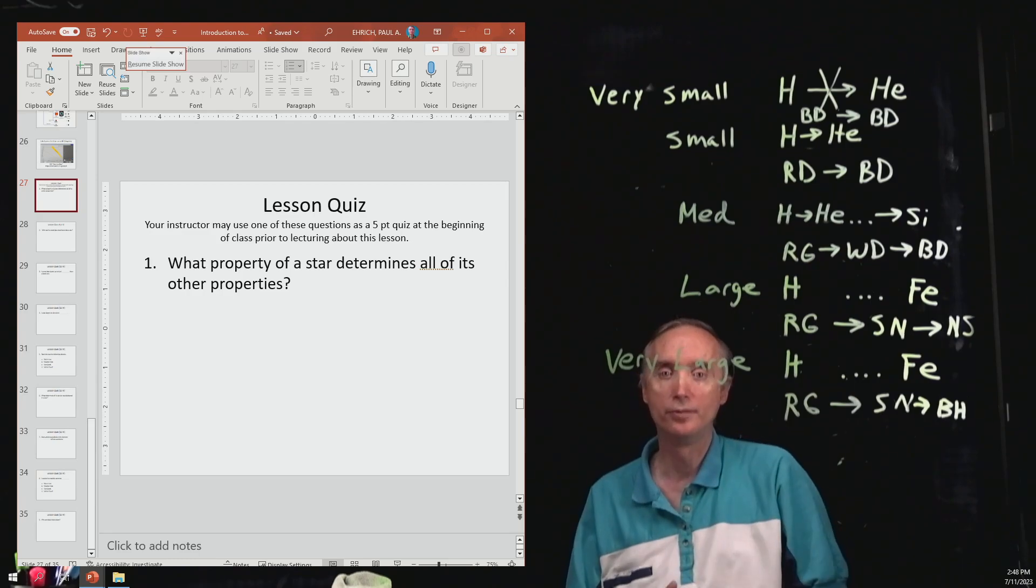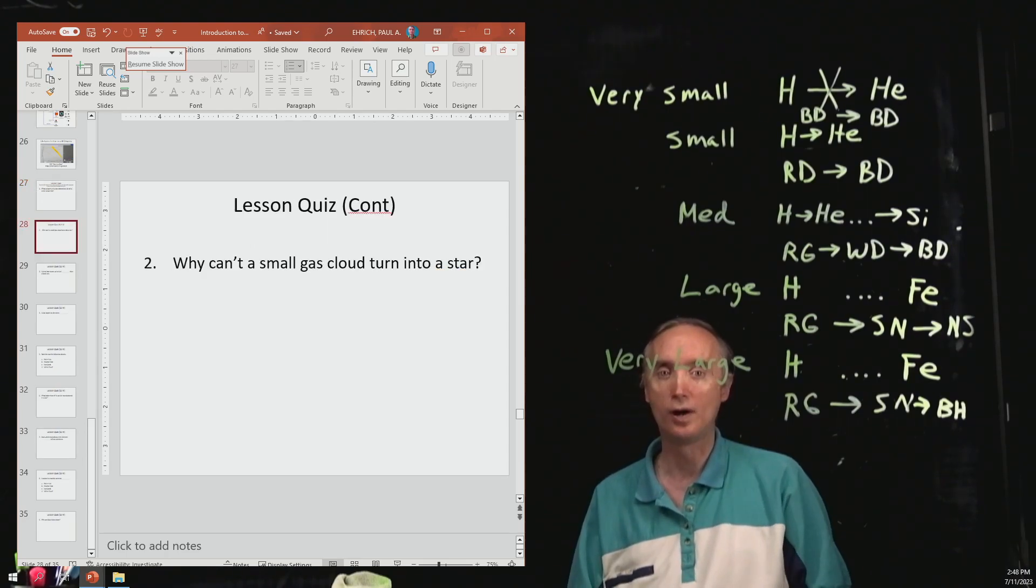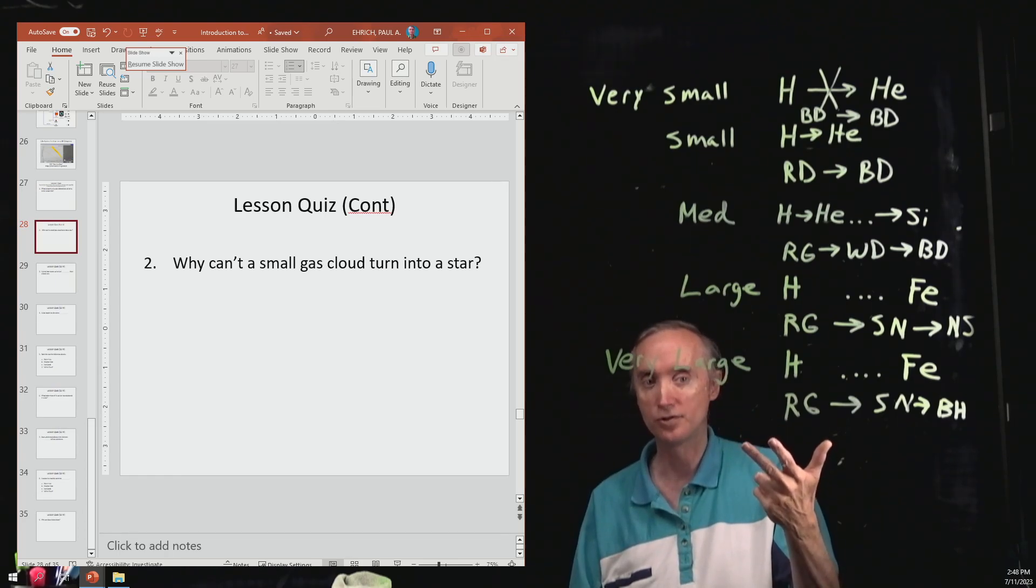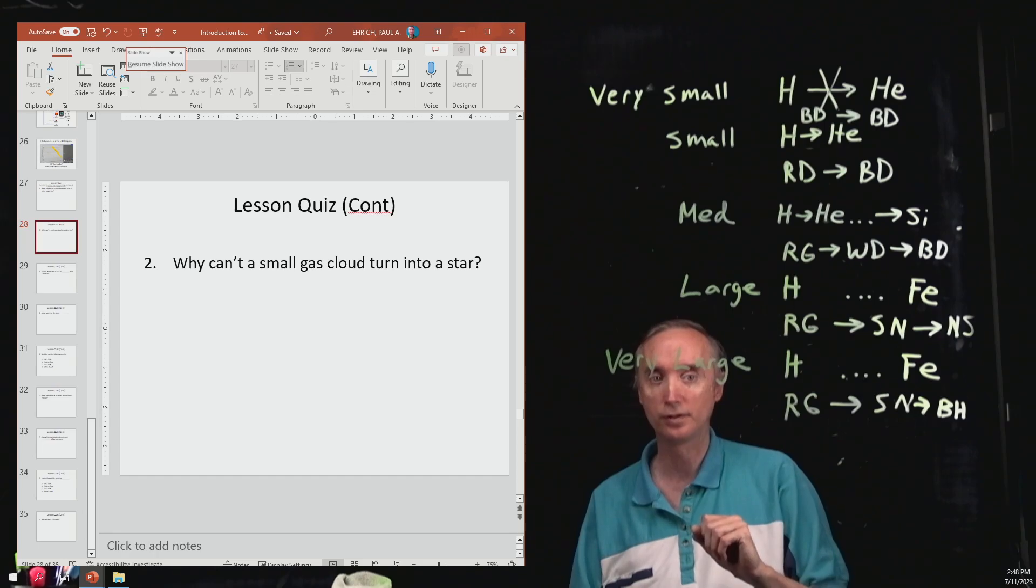So question number one. What property of a star determines all of its other properties? Its mass. Question number two. Why can't a small gas cloud turn into a star? It doesn't have enough mass, which means it doesn't generate enough gravity, which means it doesn't generate enough pressure, which means it doesn't generate enough temperature to get to that magic number of 10 million Kelvin.